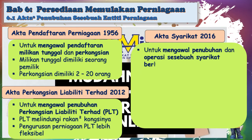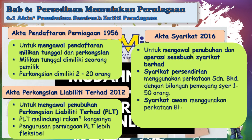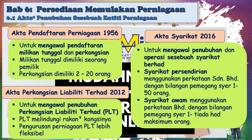Seterusnya akta yang ketiga, Akta Syarikat 2016. Akta ini digubal untuk mengawal penubuhan dan operasi sesebuah syarikat berhad, sama ada sendirian berhad ataupun syarikat awam berhad. Biasanya syarikat persendirian menggunakan perkataan Sendirian Berhad dengan bilangan pemegang saham sekurang-kurangnya seorang dan maksimum 50 orang. Manakala syarikat awam menggunakan perkataan Berhad (Bhd) dengan bilangan pemegang saham seorang paling minimum dan tiada had maksimum pemegang saham.